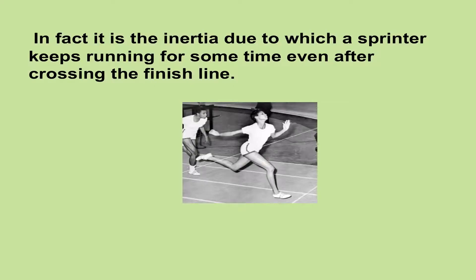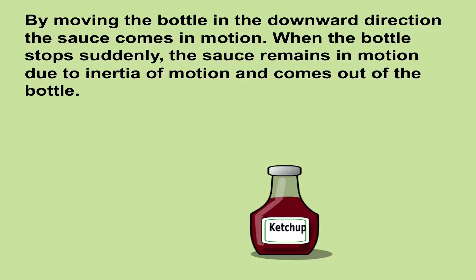In fact, it is inertia due to which a sprinter keeps running for some time even after crossing the finish line. Similarly, you would have noticed that it is difficult to take out tomato sauce from a bottle by just inverting it. However, it is easy to take out the sauce from the bottle by giving a sudden jar to it. By moving the bottle in the downward direction, the sauce comes in motion. When the bottle stops suddenly, the sauce remains in motion due to inertia of motion and comes out of the bottle.